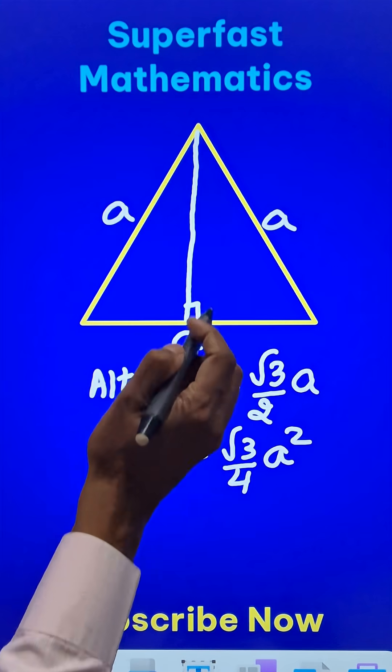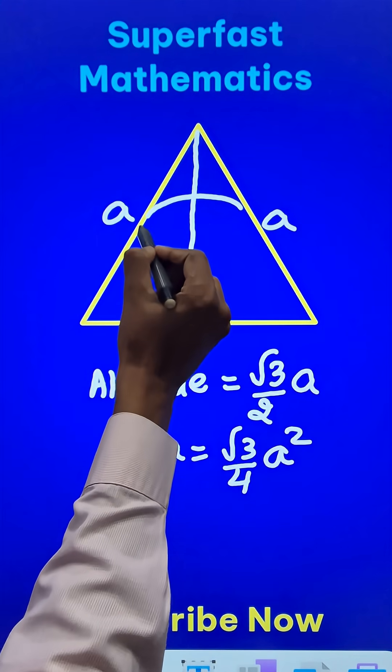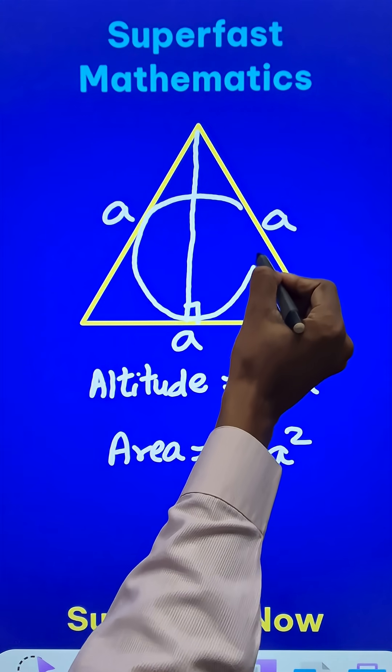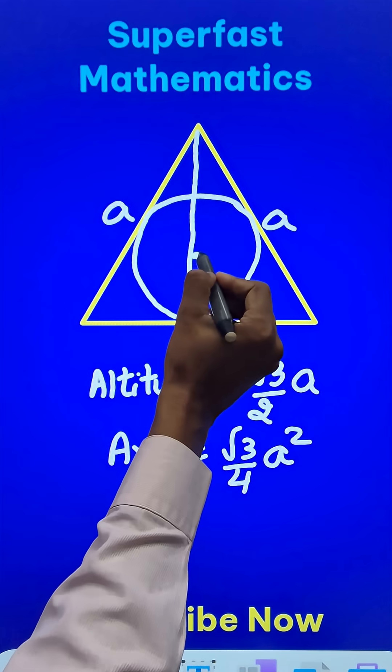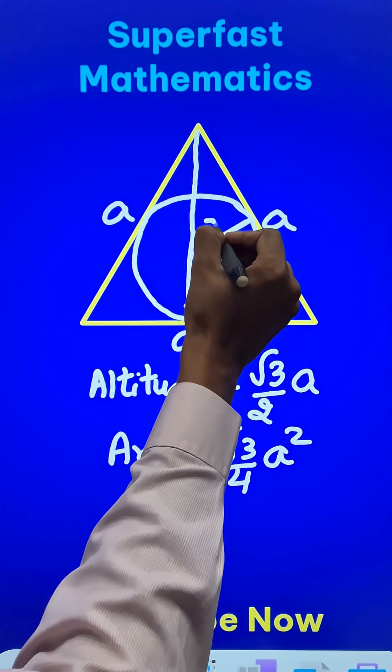And similarly, if you have to make an incircle—an incircle is a circle which is inscribed in a triangle like this—we have to find the radius of this incircle, that is small r.